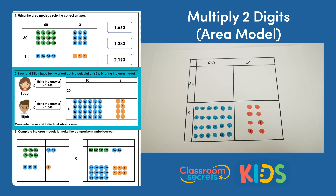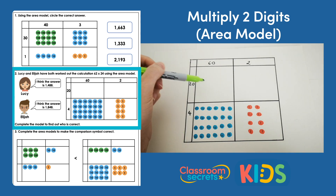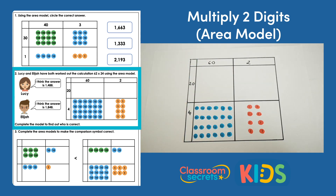Question 2: Lucy and Elijah have both worked out the calculation 62 times 24 using the area model. Lucy says the answer is 1,488. Elijah says the answer is 1,848. Complete the model to find out who is correct. What we need to do is add our place value counters to the two empty boxes and then add everything up to work out the answer.